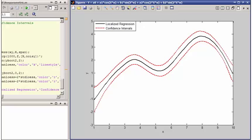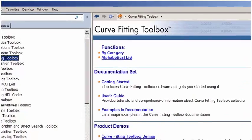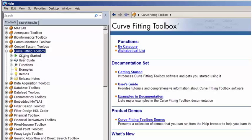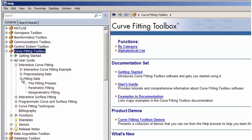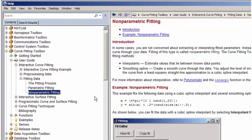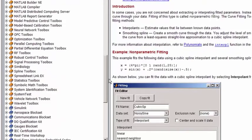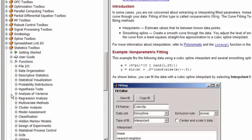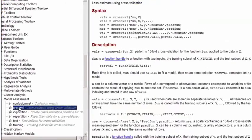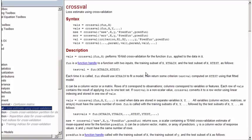This example was developed using a specific nonparametric fitting technique called localized regression, or LOESS. These same methods can be applied to other nonparametric techniques, such as smoothing splines and interpolants. You can find a complete description of Curve Fitting Toolbox's nonparametric fitting algorithms inside the product documentation. For more information about cross-validation or bootstrap, please consult the Statistics Toolbox documentation set.